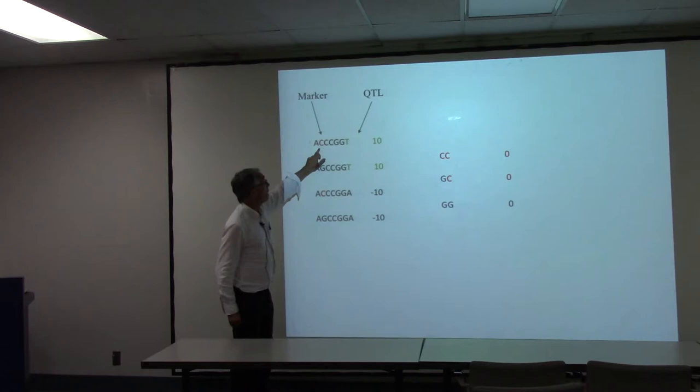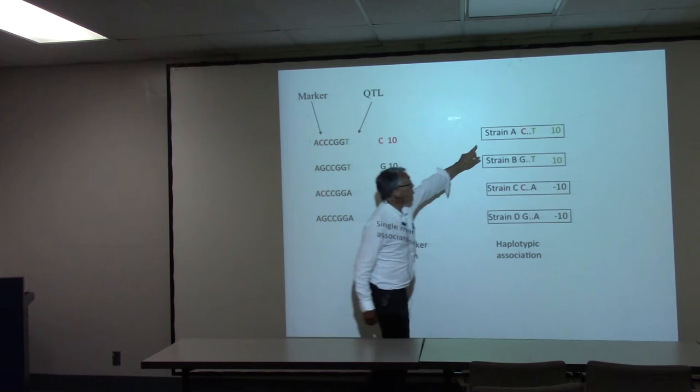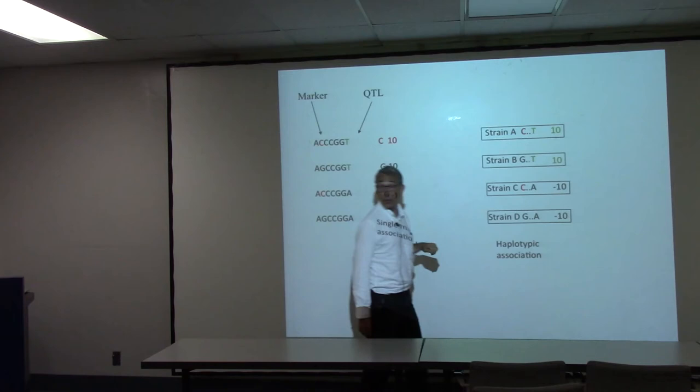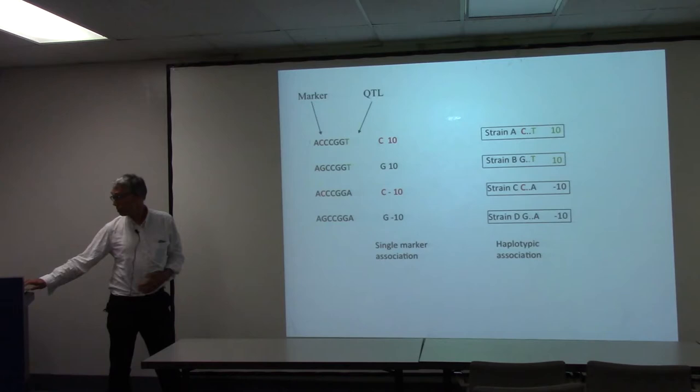The way we can solve this is by working not with the marker but with a haplotype. If we had the full strain A haplotype information, we'd know that C is associated with a T there, and the other C is associated with minus T. So we can run a haplotypic association rather than a single-marker association.